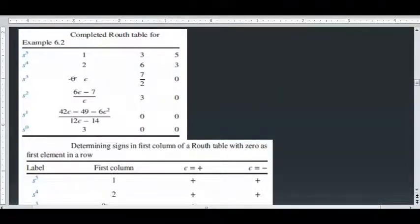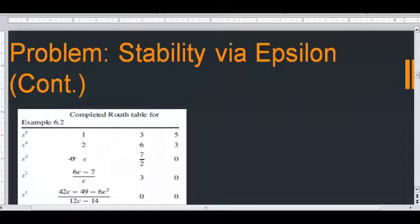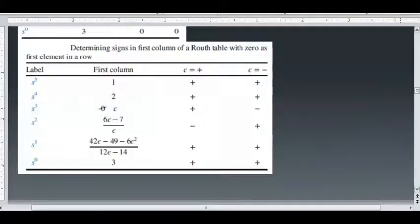That's how you start. We just look for the coefficients: s5, s3, and s1. So 1, 3, and 5. For s5 it's 1, for s3 is 3, and s1 is 5. How about s4, s2, and s0? s4, the coefficient is 2, s2 is 6, and s0 is 3. So you can just write it here: 2, 6, and 3.